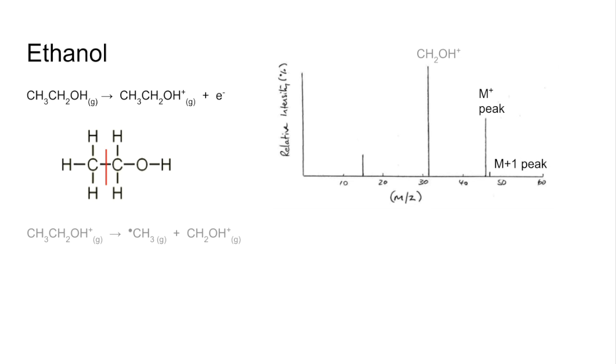So the equation for that would look like this. We've got the molecular ion peak. Remember, we're breaking it here. And we want this part to carry the positive charge because that's giving us that M/Z value of 31. So the other part is the radical. So you can see there we've got a methyl radical, which isn't detected.